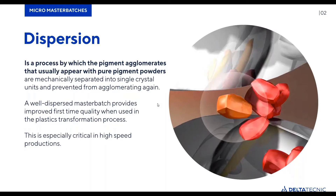By avoiding pigment agglomerates, you avoid having impurities in your cable layer and cable insulation. Remember, a pigment is an impurity in the cable. Whether organic or inorganic, agglomerated pigments have no electrical or mechanical characteristics — they only reduce those characteristics. In the case of automotive wire, they lead to sparks. So it is not only about improving color strength, but also reducing sparks and problems with electrical and mechanical characteristics, thereby increasing first-time quality.